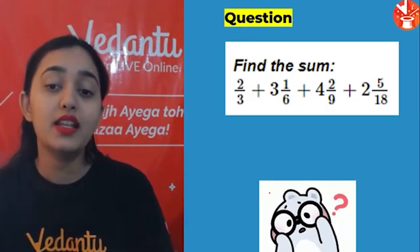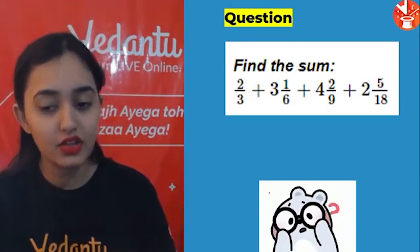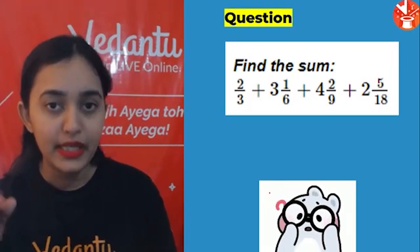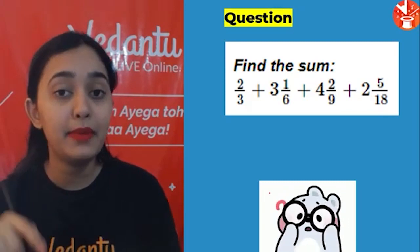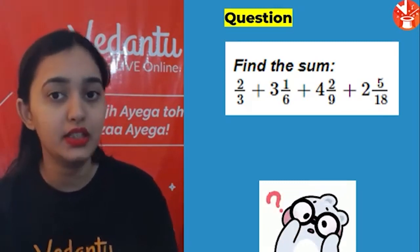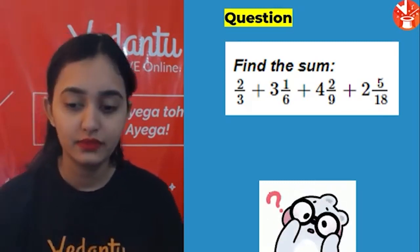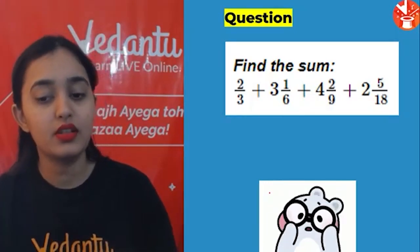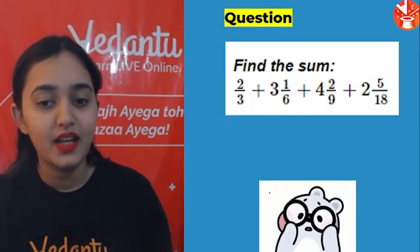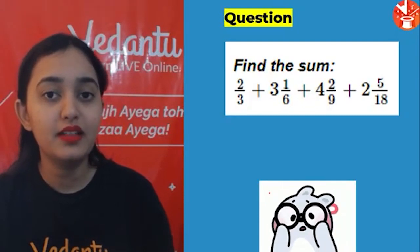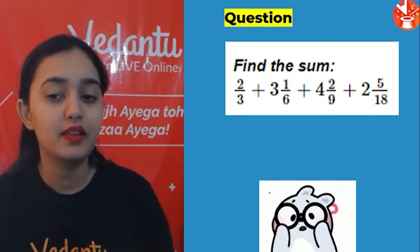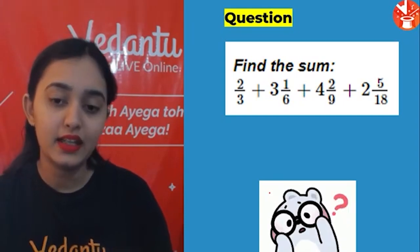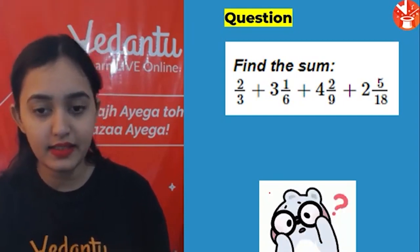Next question: find the sum of these fractions — 4 fractions ko add karna hai, mixed fraction diya hai. Pehle mixed fraction ko improper mein convert karo aur phir add karo. The fractions are: 2/3 + 3 1/6 + 4 2/9 + 2 5/18.